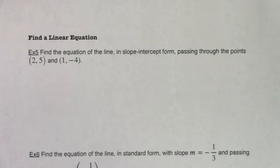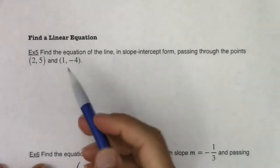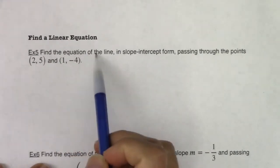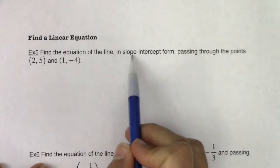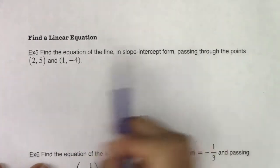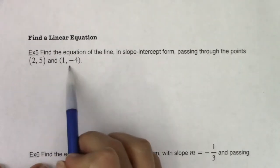Okay, gang, let's actually find some linear equations given some information. Example 5 says find the equation of the line in slope-intercept form passing through the points (2, 5) and (1, -4).